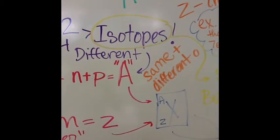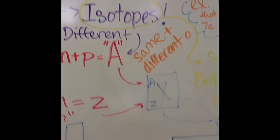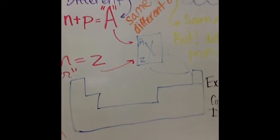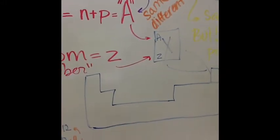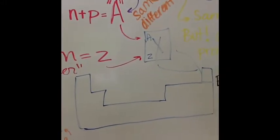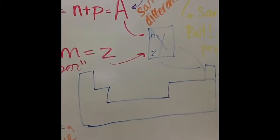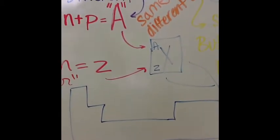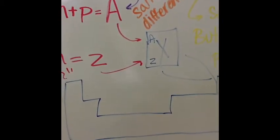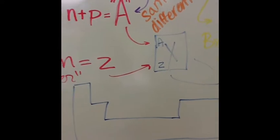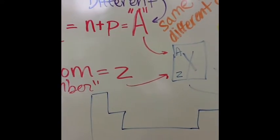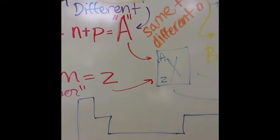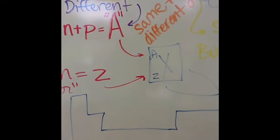You know that big table of elements with all the obscure letters on it? Well, to read it, you need to know the atomic symbol. An A (mass number) at the top of an X (which represents the element), and a Z (the atomic number) at the bottom of the X, is the atomic symbol.